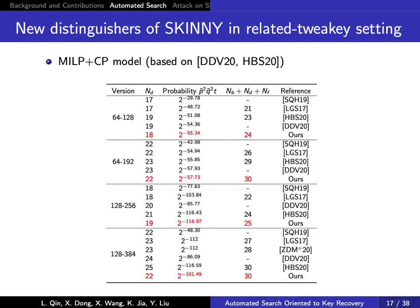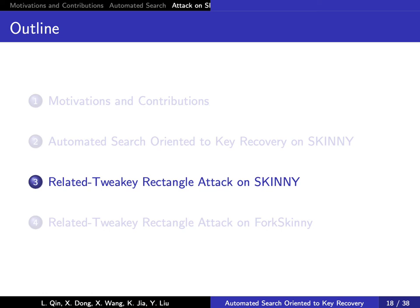With our new MILP model, we search for more proper truncated upper and lower differentials for key recovery attacks. Then we use the CP model to get the instantiations for the truncated differentials. We also calculate the probability considering the clustering effect and experimentally calculate the probability of the middle part of the distinguisher. The table gives the summary of related-tweakey boomerang distinguishers for Skinny, and then related-tweakey rectangle attacks with new rectangle distinguishers on Skinny.